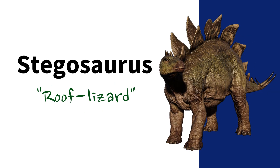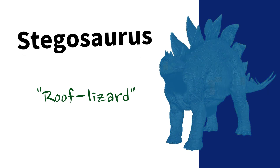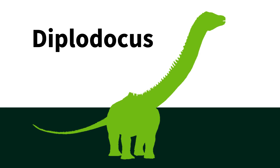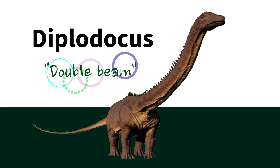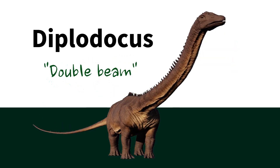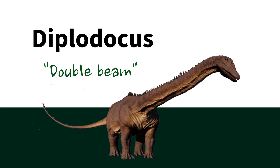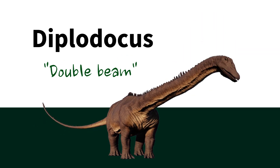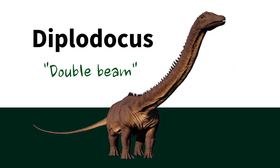Diplodocus — 'double beam.' This name refers to the dinosaur's long double-beam tail, which may have been used for balance and communication.